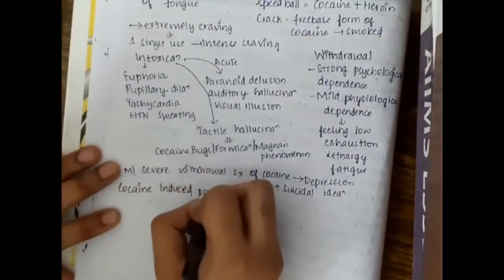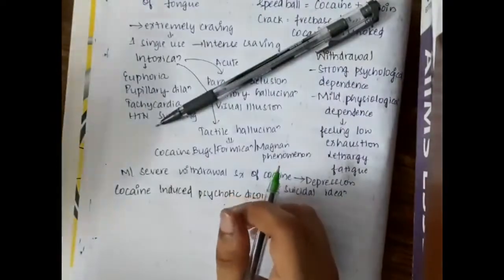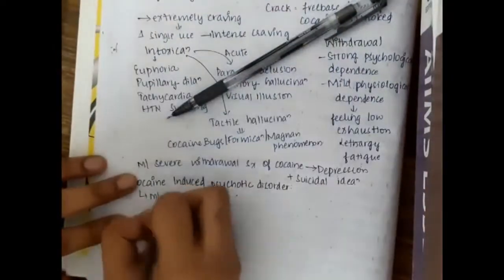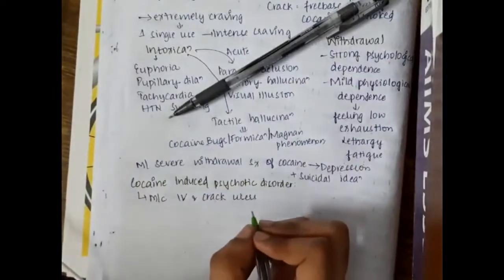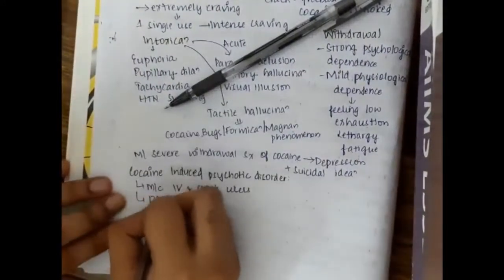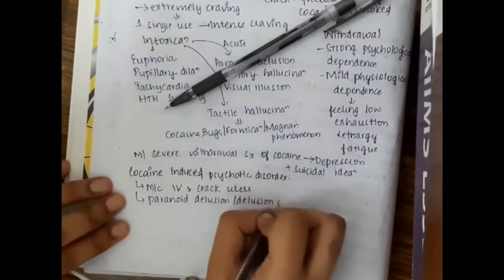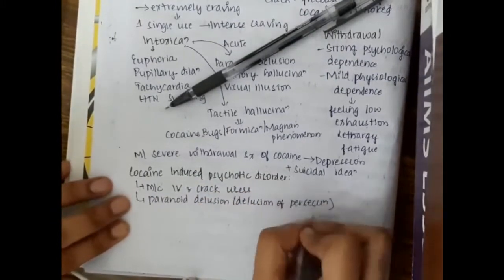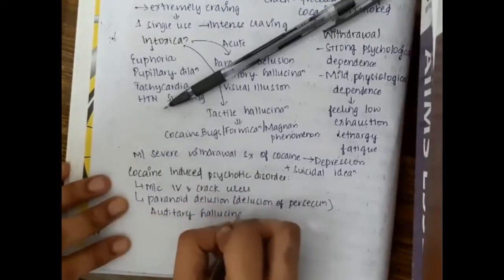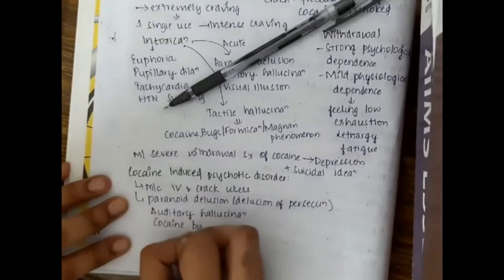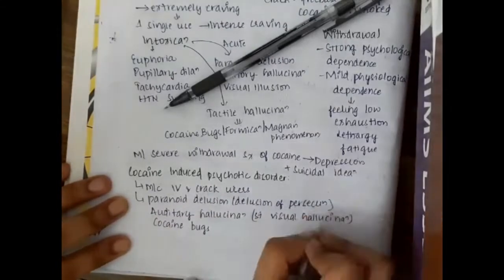Cocaine induced psychotic disorder is more commonly seen in IV and crack users. There is paranoid delusion which is delusion of persecution, auditory hallucinations, and cocaine bugs are also seen in this cocaine induced psychotic disorder.